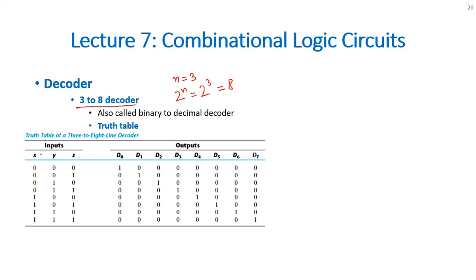For example, if you have 3 inputs X, Y and Z, the different combination possible of these inputs are given here and based on every input we will have a certain combination of the output.